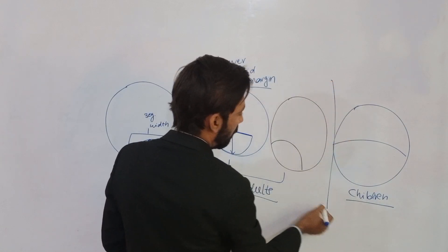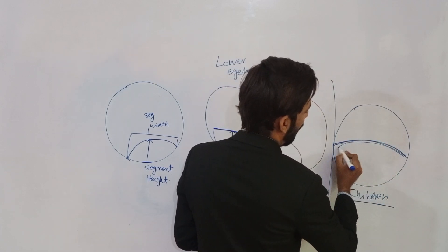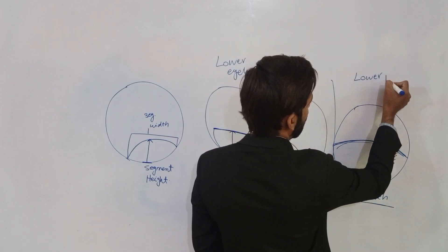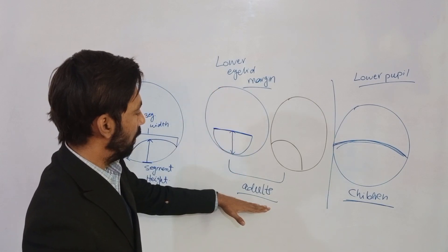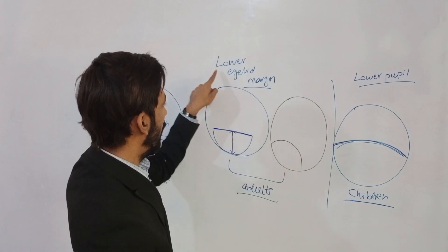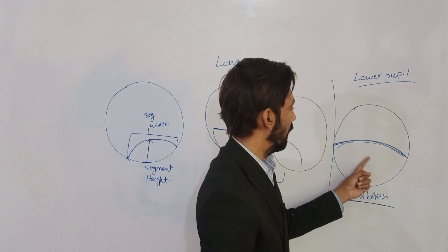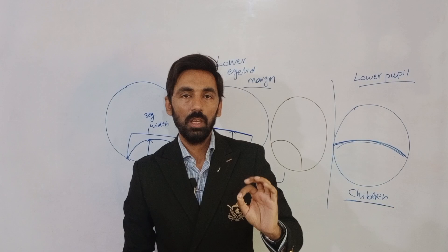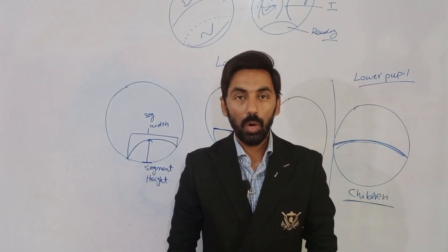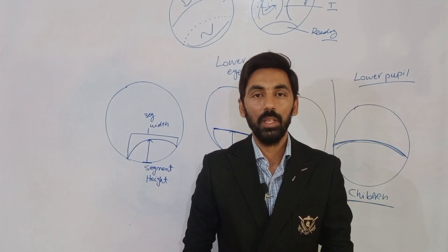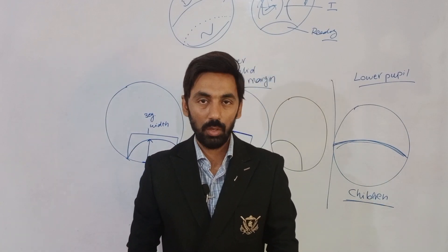For children using executive bifocals, this line should be aligned with the lower pupil margin — not the lower eyelid. So to summarize: for adults with flat-top D or Kryptok bifocals, mark at the lower eyelid margin; for children with executive bifocals, align at the lower pupil margin. These are the correct measurements for every type of bifocal. If you have questions or queries, drop them in the comments and we'll make an explanatory video on your topic of concern.